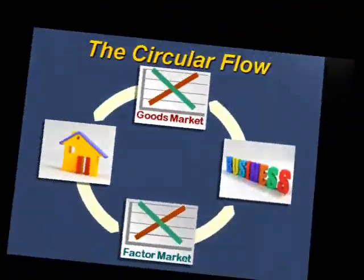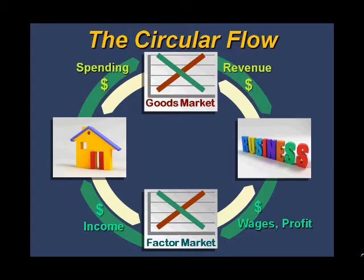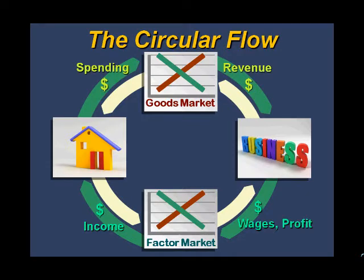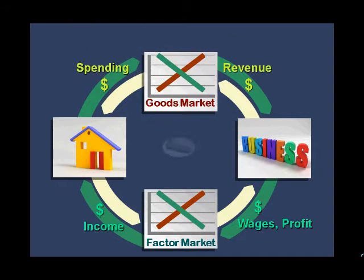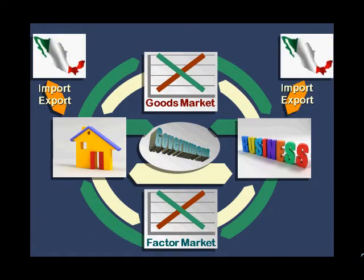A more complex and accurate picture includes several additional features. Money flows through the economy to track movements and transactions of goods and services. If anything of value changes hands, there will always be a corresponding flow of money in the opposite direction. The government sector provides services including income redistribution and is funded by taxes. Every economy interacts with other nations by selling exports and buying imports.